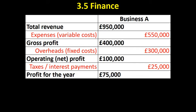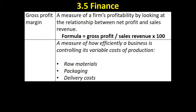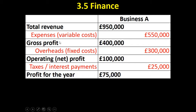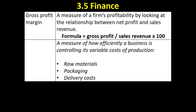The first ratio you need to be aware of is the gross profit margin. The gross profit margin is calculated by taking total revenue and subtracting the variable costs of production — that is, the raw materials used to produce the good. The formula is: gross profit divided by sales revenue, times 100. It measures the relationship between gross profit and sales.